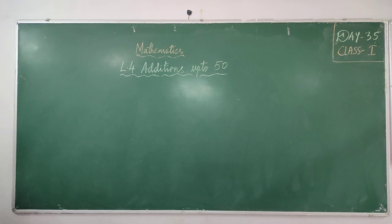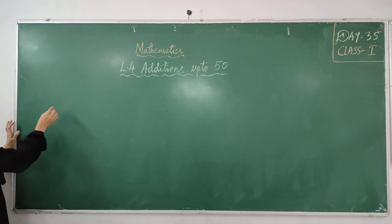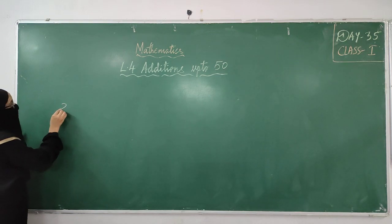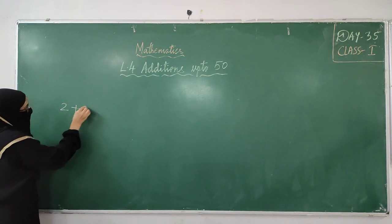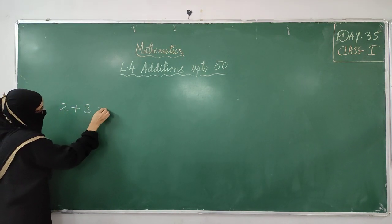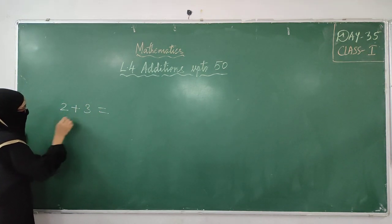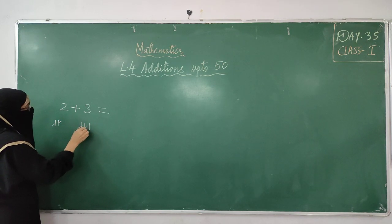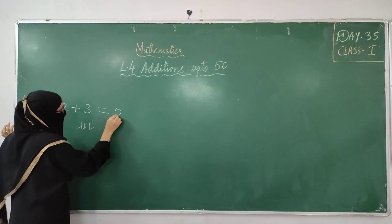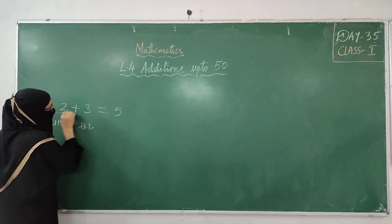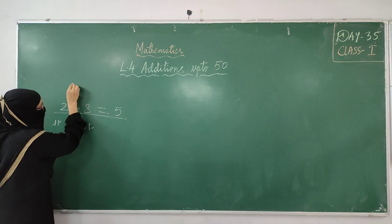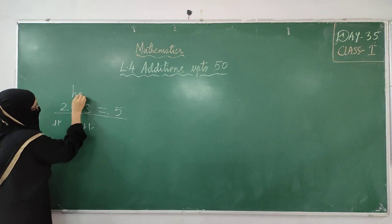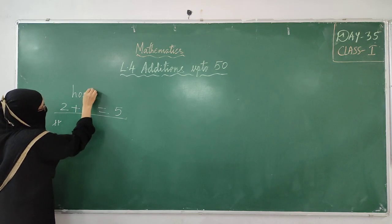In the previous classes we have studied additions in a horizontal way — for example, 2 plus 3, counting 1, 2, 3, 4, 5. These were the additions in horizontal, where numbers are placed one beside the other.